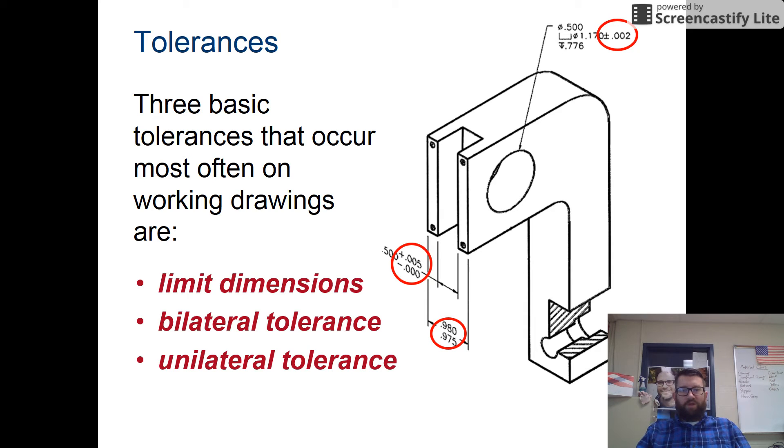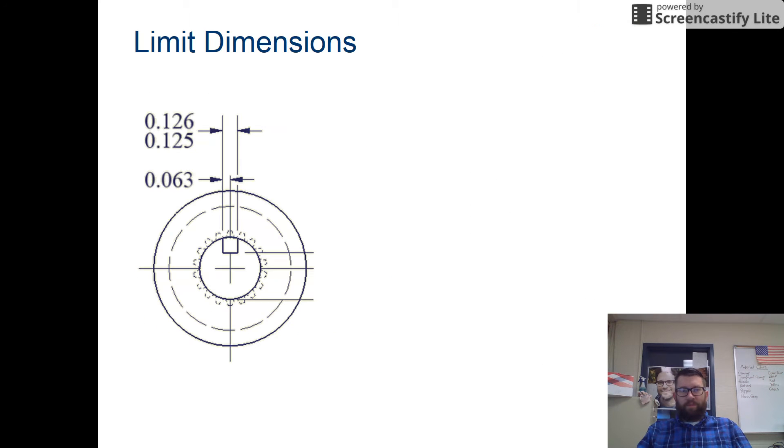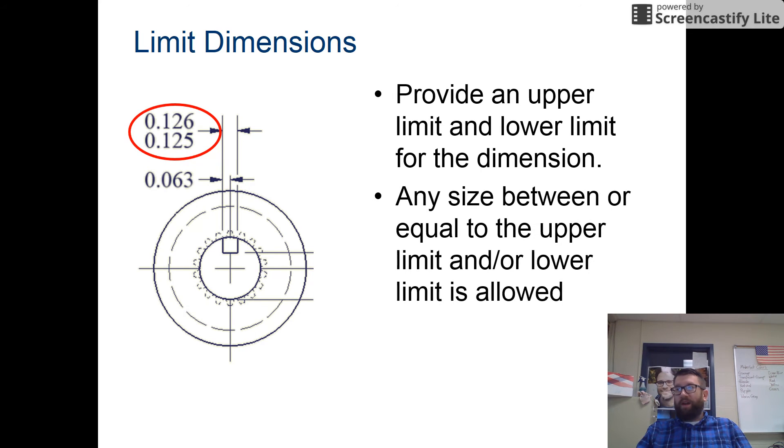First of all, we have limit dimensions, and these will provide an upper and lower limit for the dimension. Any size between or equal to the upper and lower limit is acceptable. So in this case, any number between 0.126 and 0.125 is going to be an acceptable limit.